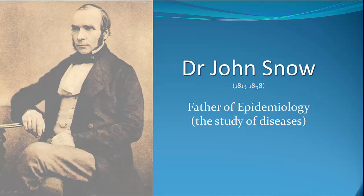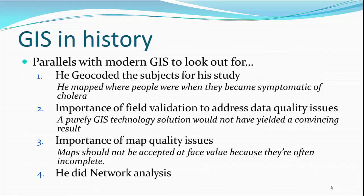There are a number of parallels with modern GIS that I want you to look out for as we go through this. The first is that he geocoded the subjects for his study. In other words, he mapped where people were when they became symptomatic of cholera. This idea of taking a list of people's addresses and putting them on a map is what's called geocoding, and we do that all the time in GIS — and he was doing that even back in the 1850s.